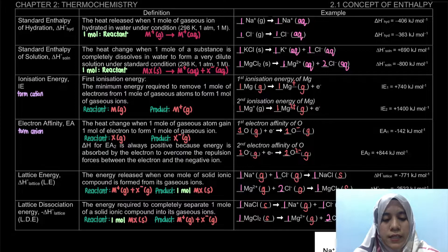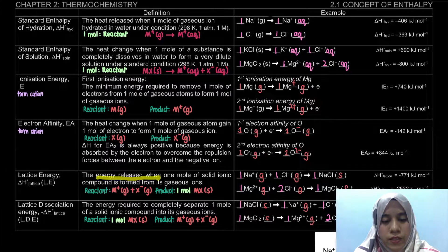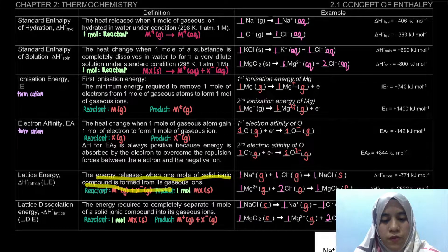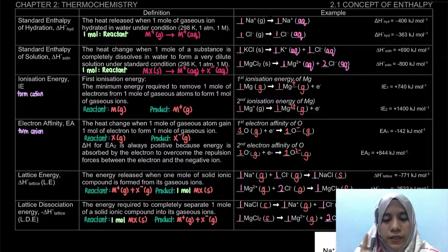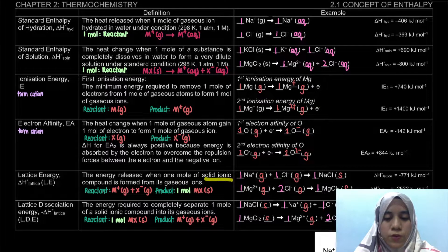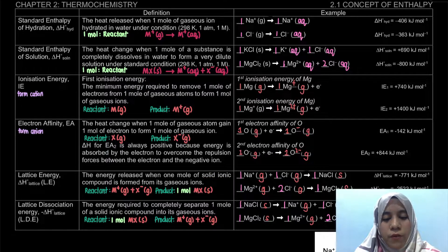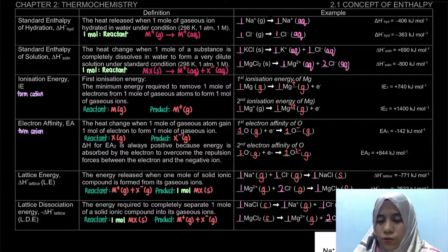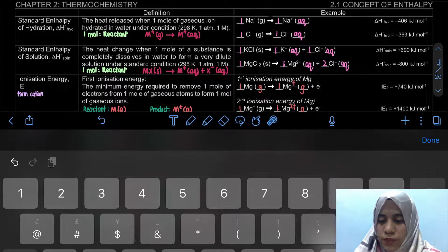And what is lattice energy? Lattice energy is the energy released when one mole of solid ionic compound is formed from its gaseous ions. In this case, only the product will be one mole, and it must be in the solid state — formed from the gaseous ions. That is the definition, so let's look at our notes on page 9.